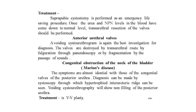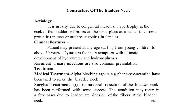The next congenital anomaly is congenital obstruction of the neck of the bladder — Marion's disease. The symptoms are almost identical to those of congenital posterior urethral valves. Diagnosis can be made by cystoscopy, through which hypertrophic interureteric ridge can be seen. Voiding cystourethrography will show non-filling of the posterior urethra. Treatment is Y-V plasty — a cut made in Y shape and sutured in V shape.